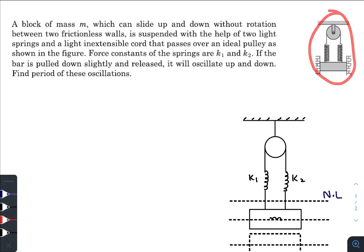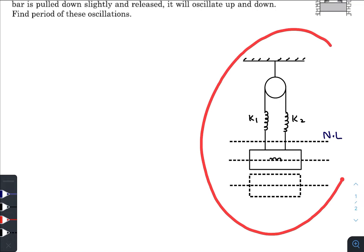As you can see in the diagram, there are two springs having force constants k1 and k2, so both springs are not identical. If the bar is pulled down slightly and released, it will oscillate up and down. We need to find out the time period of these oscillations.